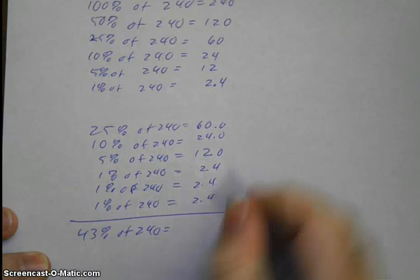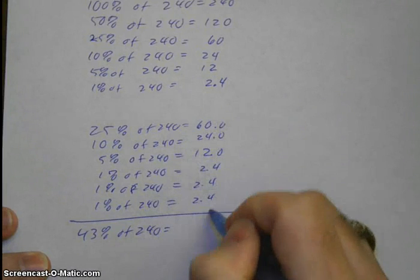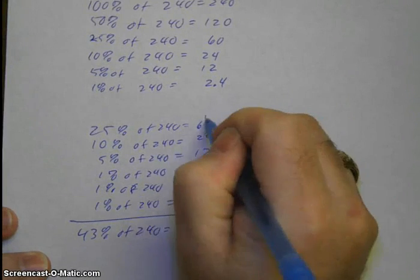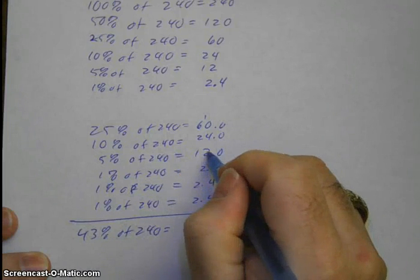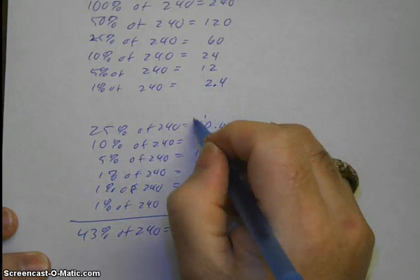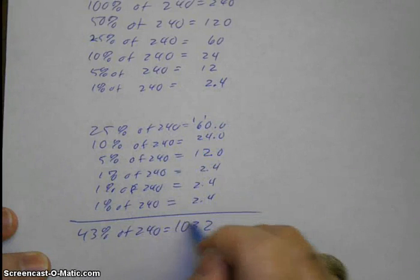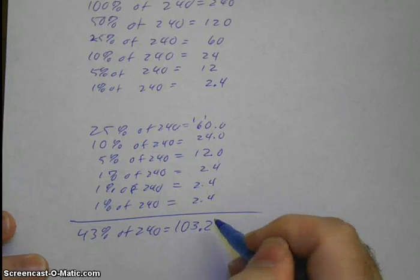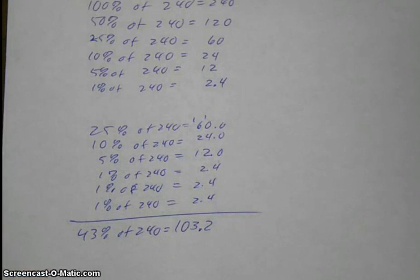60 plus 24 plus 12 plus 7.2 equals 103.2. So 103.2 is 43% of 240, and that is benchmark percents.